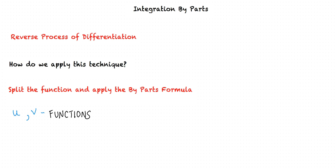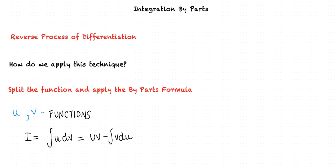In this method, we split the given function we are required to integrate and apply the Integration by Parts formula. Let u and v be the functions we have separated. Then according to the by-parts formula, we have I equals the integral of u dv, which equals uv minus the integral of v du.